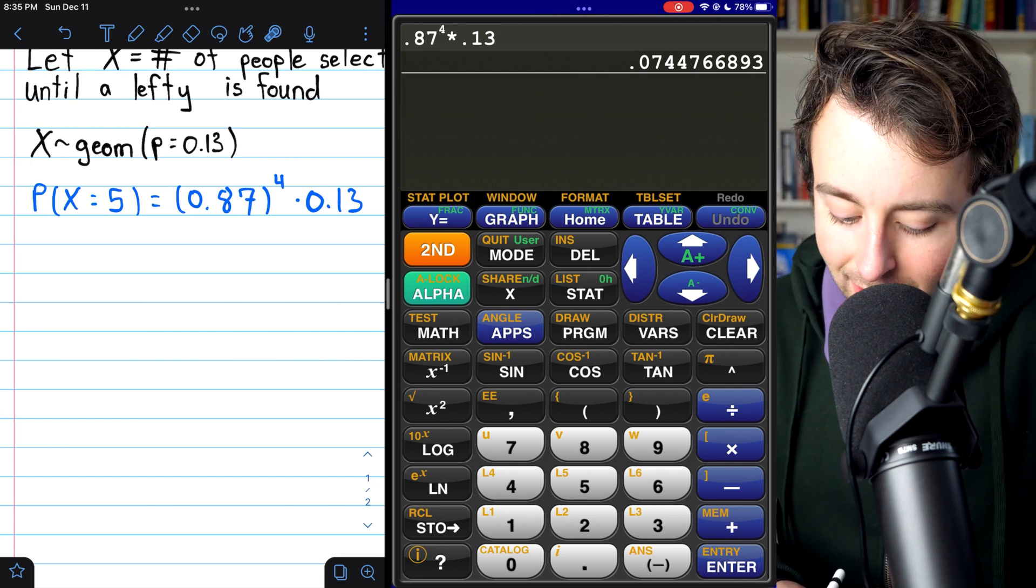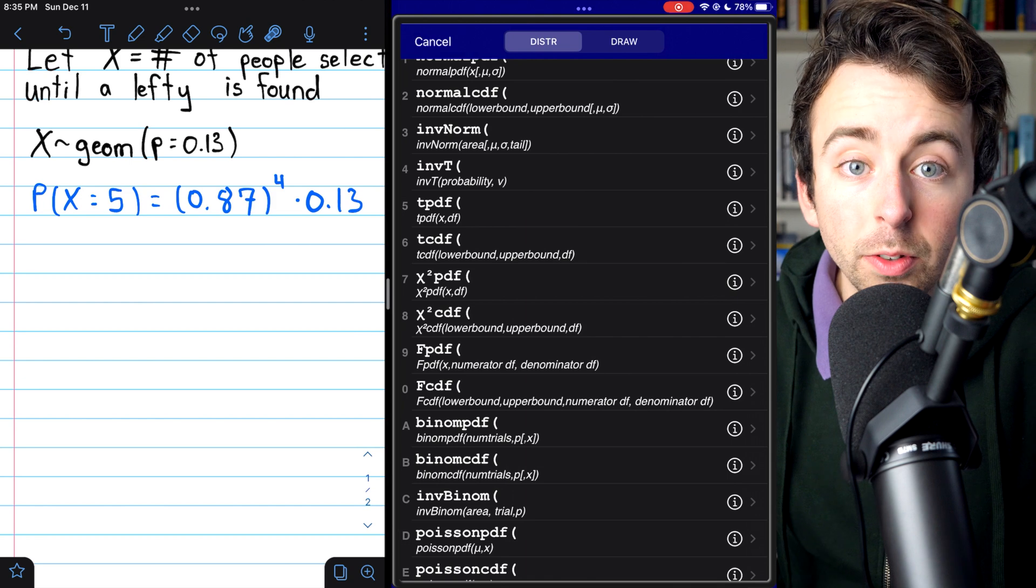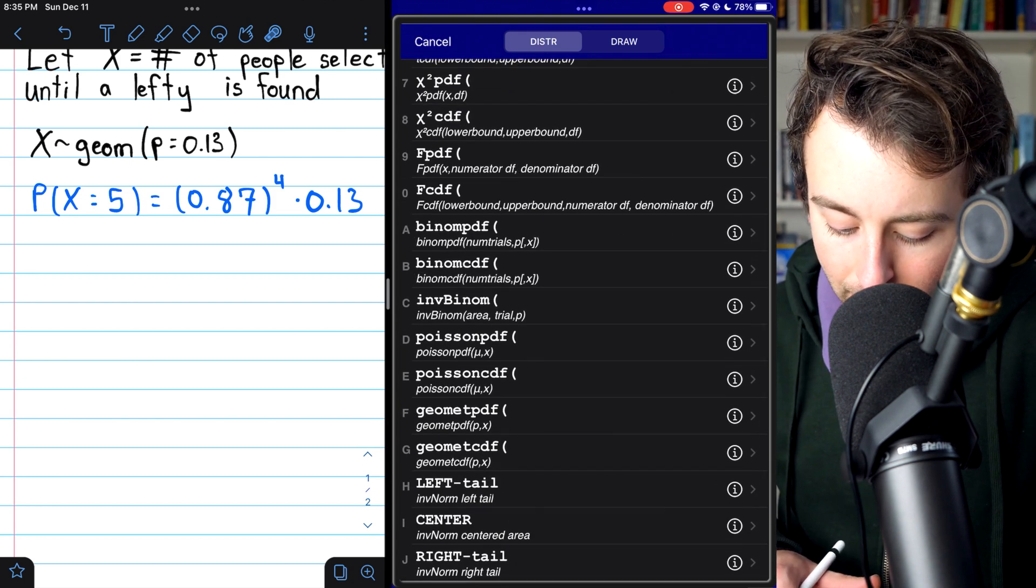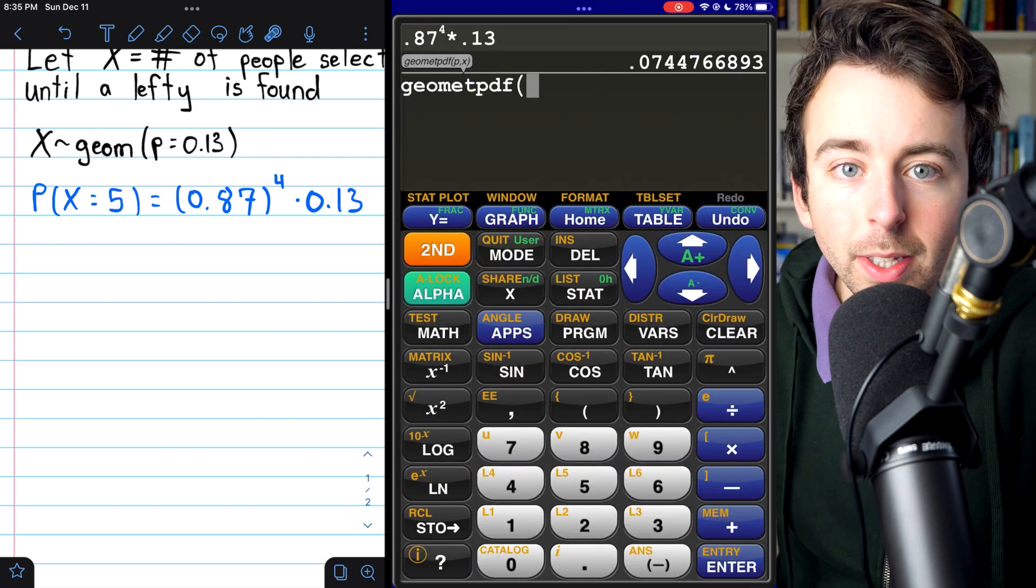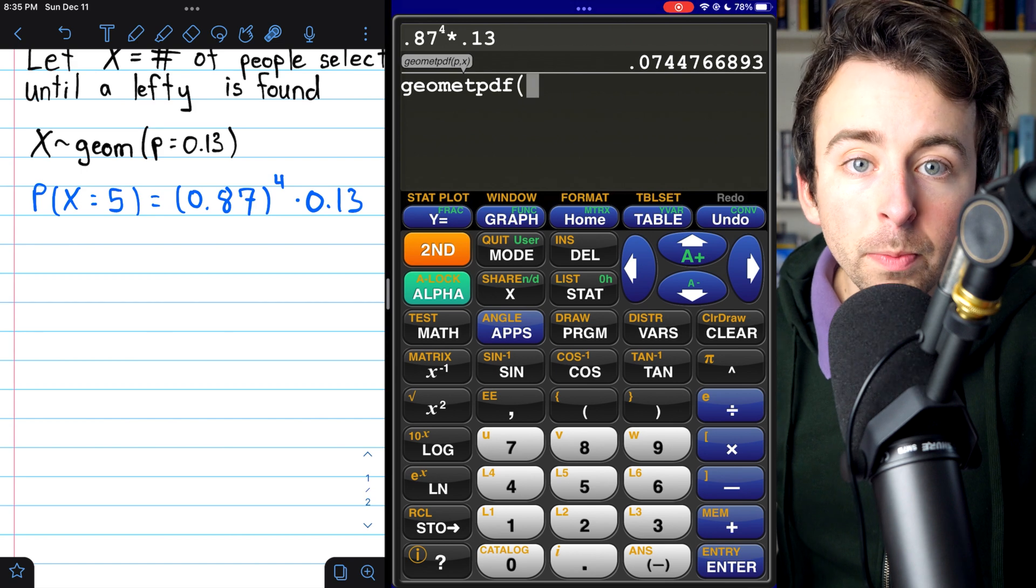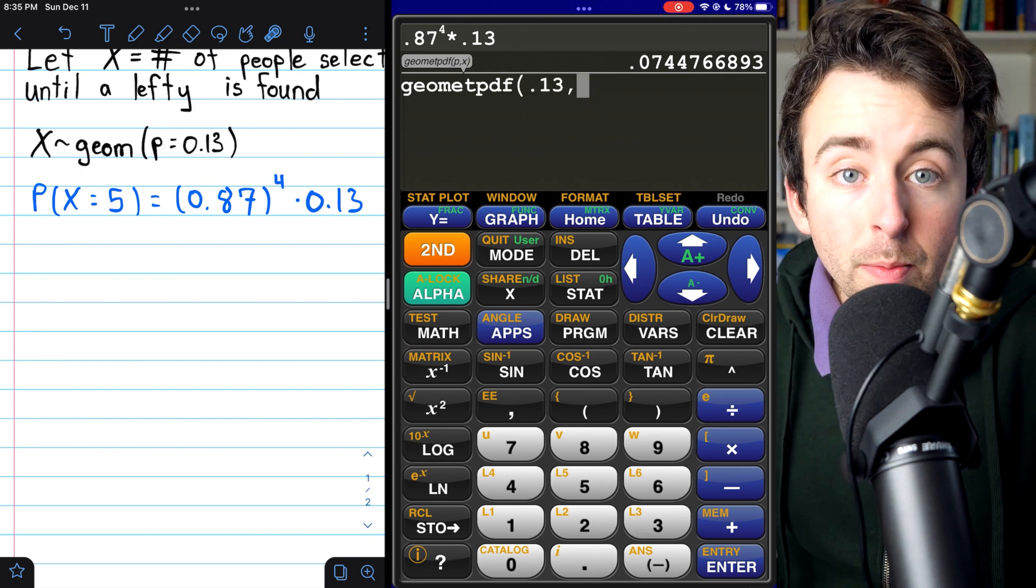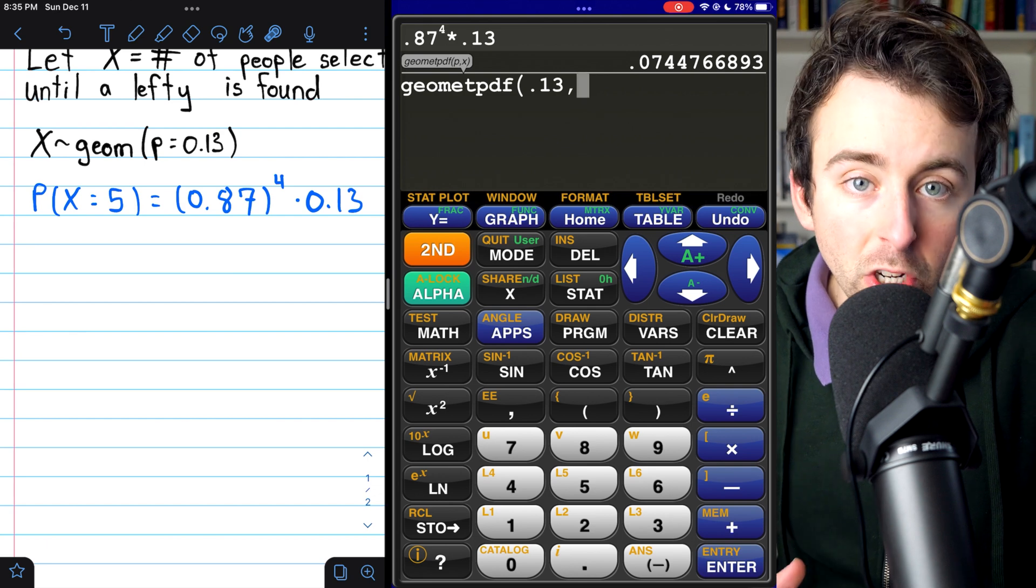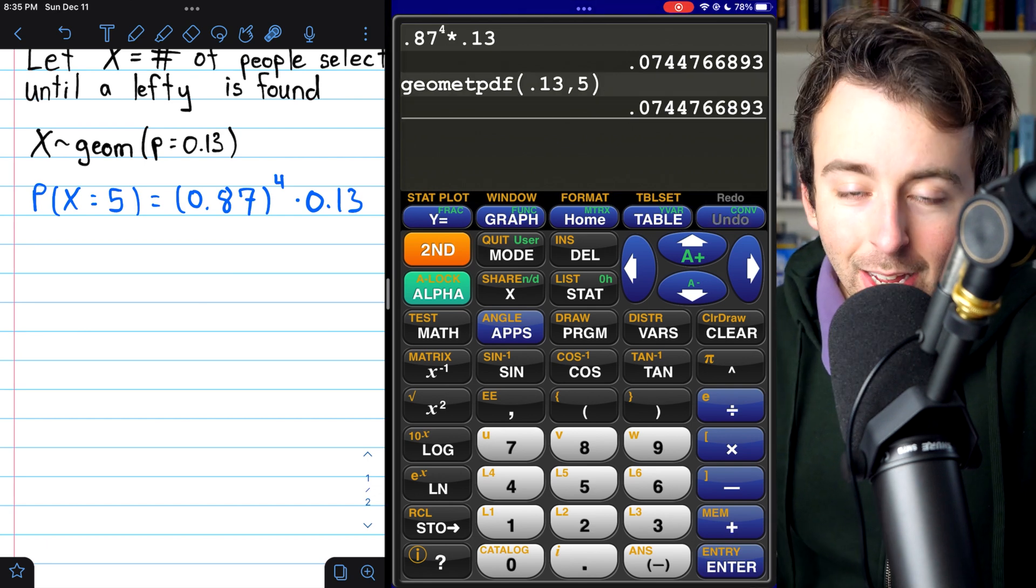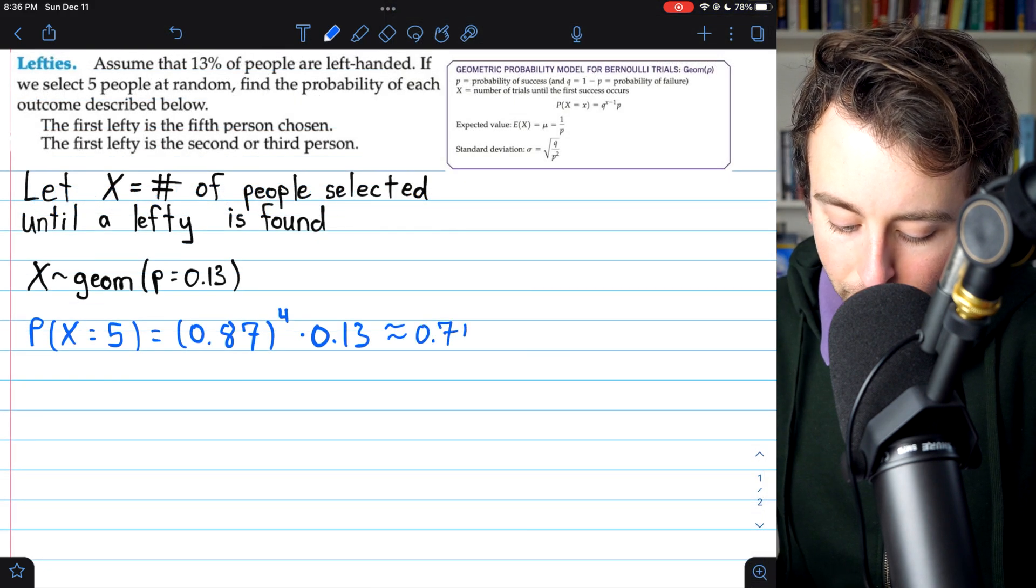To do that, we press second and then vars to access our calculator's distribution functions. And we can scroll down to the geometric PDF. That's the geometric probability distribution function. We need to put in our p parameter, the probability of success, which is 0.13. And we want the probability that our geometric random variable equals 5. So then we put in 5, and you see we get the same thing. So this turns out to be about 0.74.